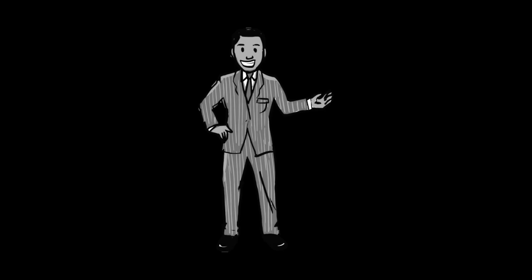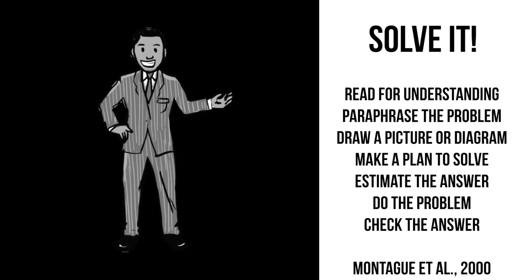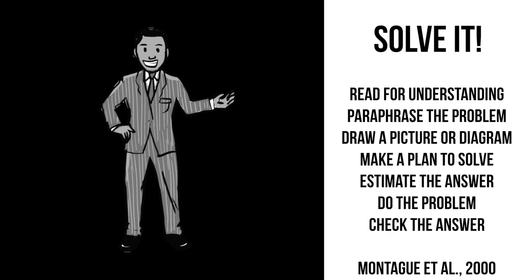One example of a cognitive strategy in mathematics is the solve-it method of problem solving. This requires the student to read a problem for understanding, paraphrase the problem into their own words, visualize a picture or diagram of the problem, make a plan to solve the problem, estimate the answer, do the arithmetic to solve, and then check it to make sure everything is right.